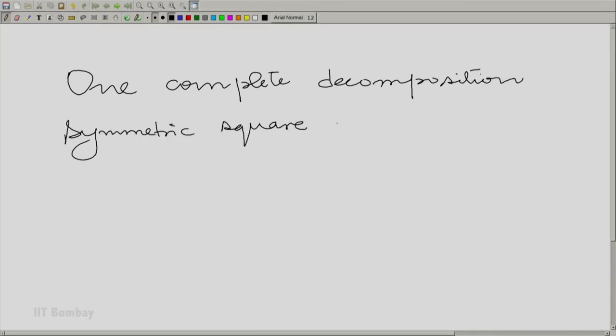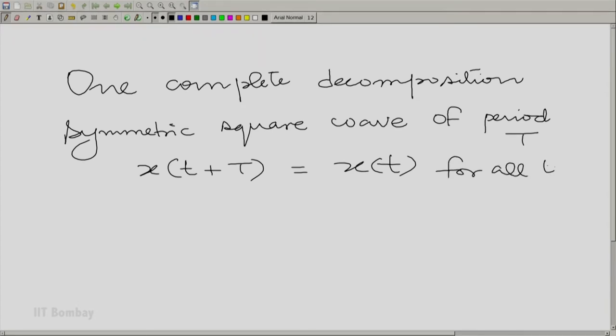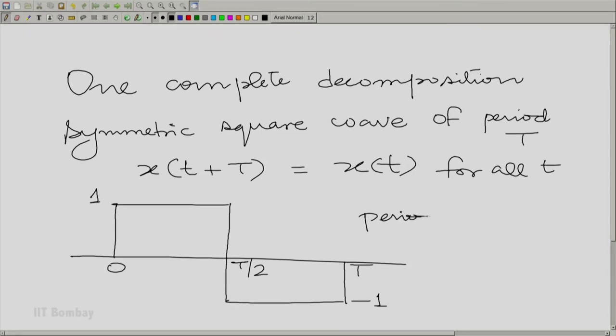We had a symmetric square wave of period T. Of course you say that by writing x(t+T) is equal to x(t) for all t. We will show x(t) in one period: it is 1 for the first half period and minus 1 for the second half period and then periodically repeat it. This is how x(t) looks.